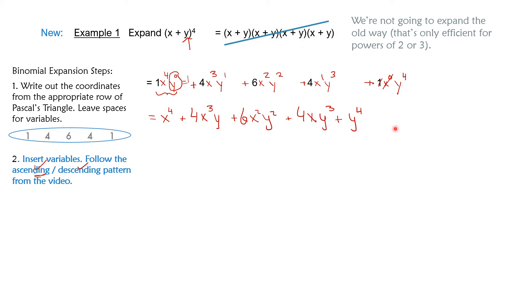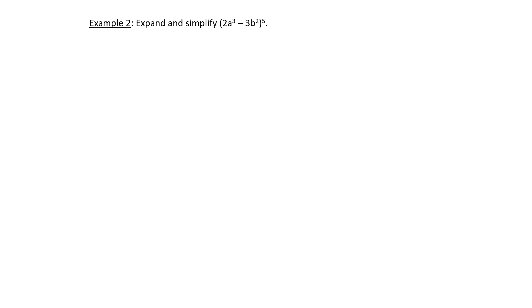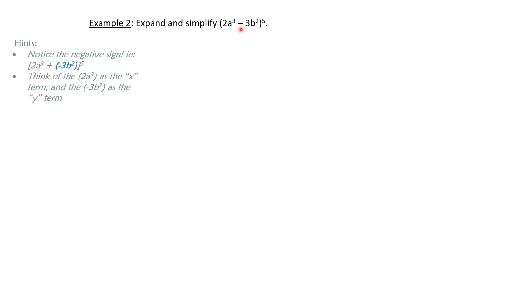That is expanding (x + y) to the 4th without having to write it all out and distribute everything. This is much faster. You wouldn't use this for power of 2 or 3 — those are quick to distribute yourself. But for power of 4 or higher, use this new strategy to avoid too many mistakes. Now let's try a harder one: expand and simplify. The first issue is I have a negative sign in the middle, not a positive sign.